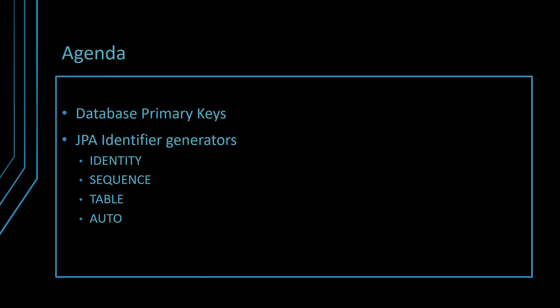First, we will talk about database primary keys and why synthetic identifiers are usually preferred. Next, we will discuss all JPA identifier generators: identity, sequence, table, and auto.